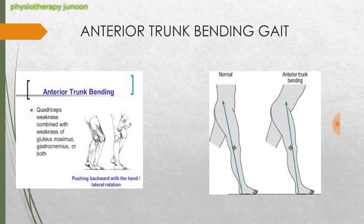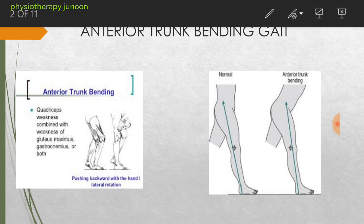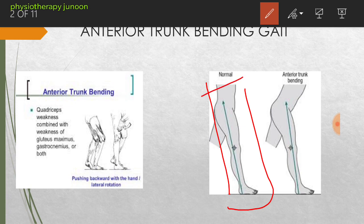In the anterior trunk banding gait, you see in the picture there is a normal gait or normal walking of a person. You see that the axis or the line of gravity passes behind the knee or the knee joint, and in case of anterior trunk banding it passes in front of the knee.